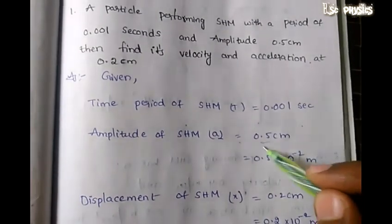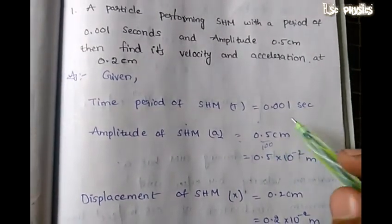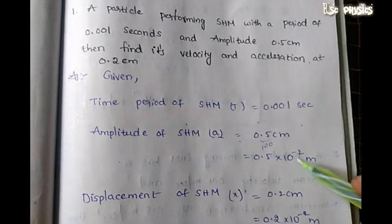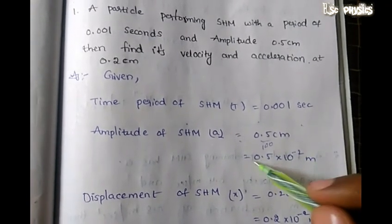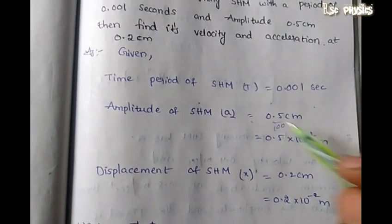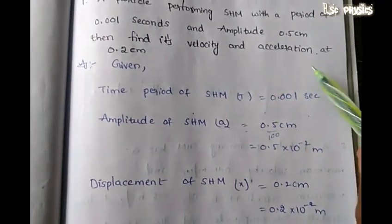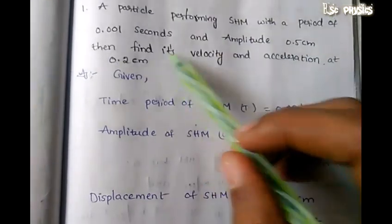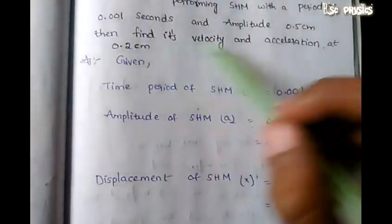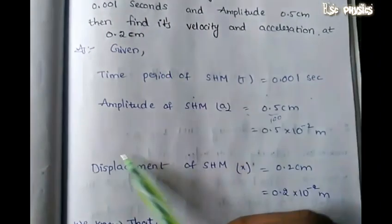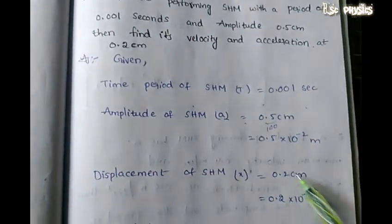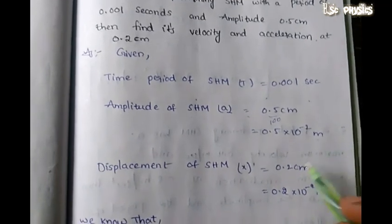So we convert to meters: 0.5 divided by 100, which is 0.5 into 10 to the power of minus 2 meters. The displacement x is equal to 0.2 cm, which we convert to meters as well.